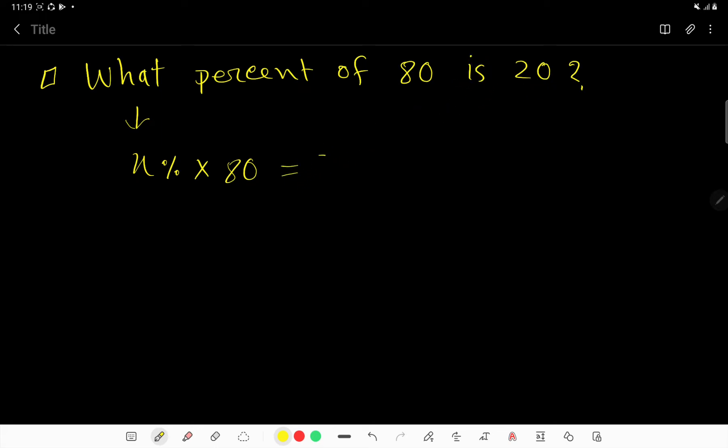equal sign, then 20. So this is the equation. Let me solve. Percent means 1 over 100, so it will be multiplication